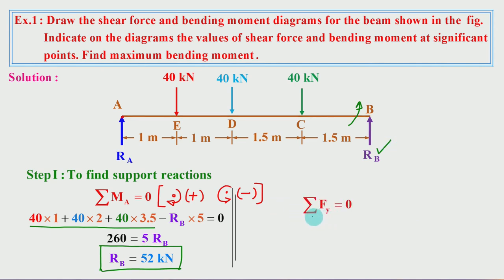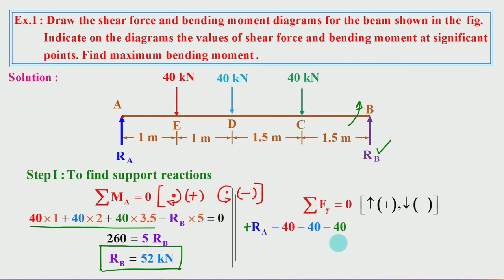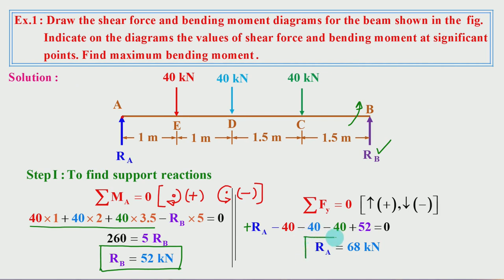Next, apply the second condition of equilibrium — summation of Fy equals zero. Convention: upward force is positive, downward force is negative. So RA + RB - 40 - 40 - 40 = 0. Substituting RB = 52: RA + 52 - 120 = 0, therefore RA = 68 kN.